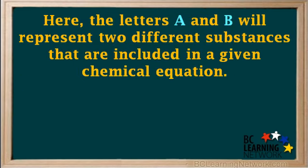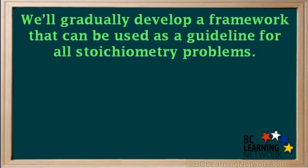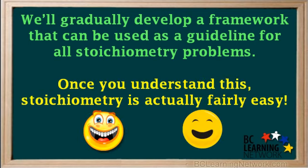In this video, the letters A and B will represent two different substances that are included in a given chemical equation. A and B can be anywhere in the equation, either on the same side or on different sides. We will gradually develop a framework that can be used as a guideline for all stoichiometry problems. Once you understand this, stoichiometry is actually fairly easy.